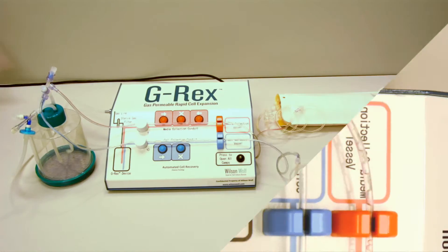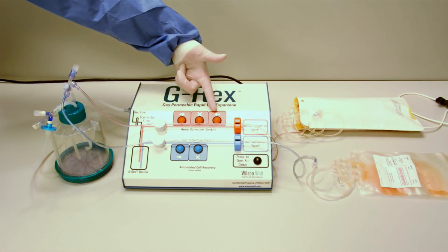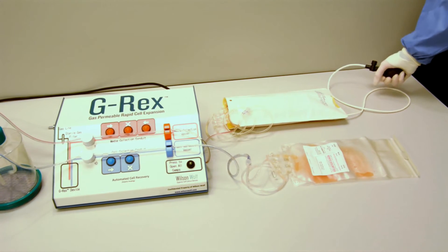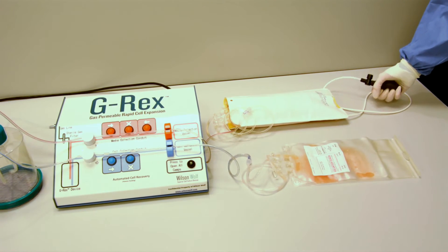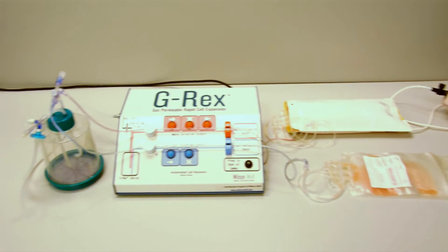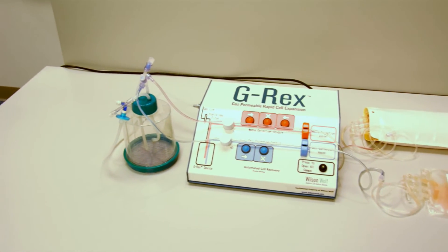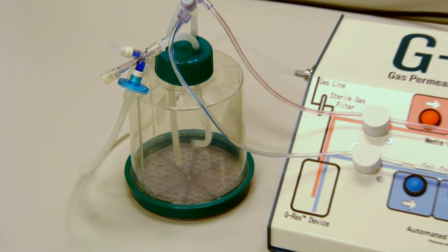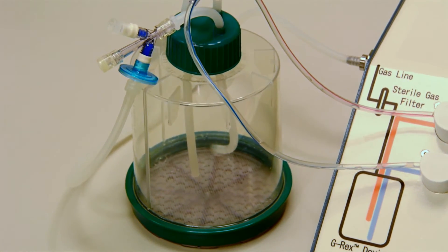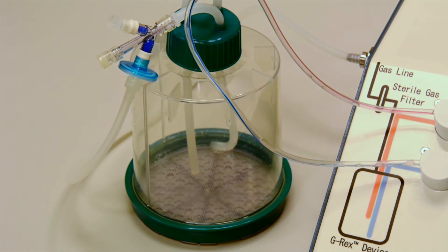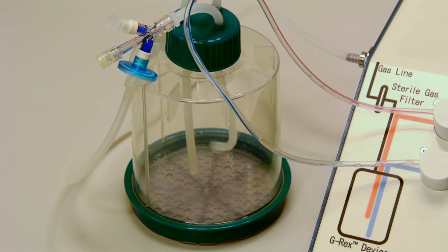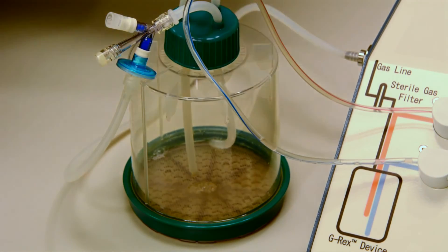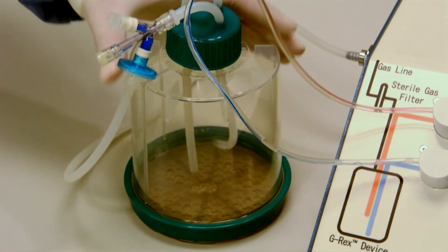At this point, since this is a closed system, we can press this button to release the media line clamp and direct some excess media back into the G-REX using this aqua press. We can use this media to rinse the flask and recover any residual cells in the flask and cell line.